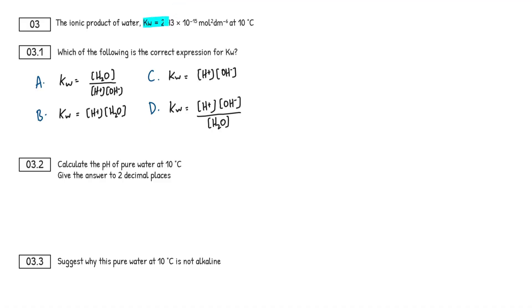So the ionic product of water is this value right here, and this is at 10 degrees Celsius. And then question 3.1, which of the following is the correct expression for KW? So starting off nice and easy, we've got a four choice, multiple choice question, A, B, C and D. Okay, so pause the video, think to yourself which one of these A to D is the correct expression.